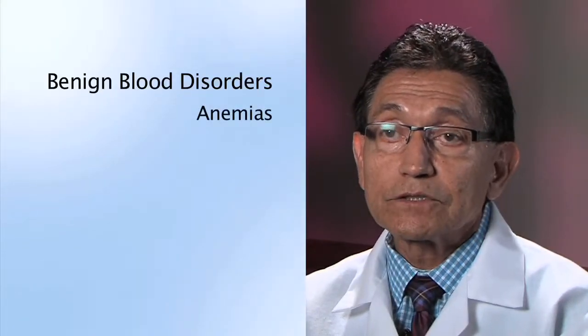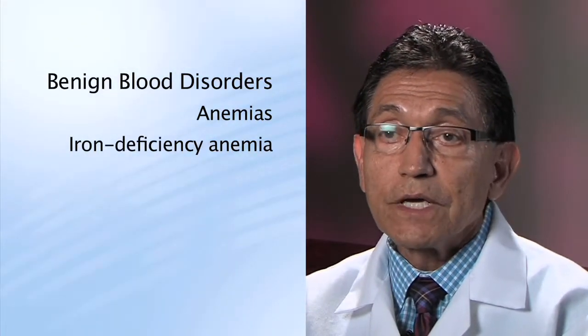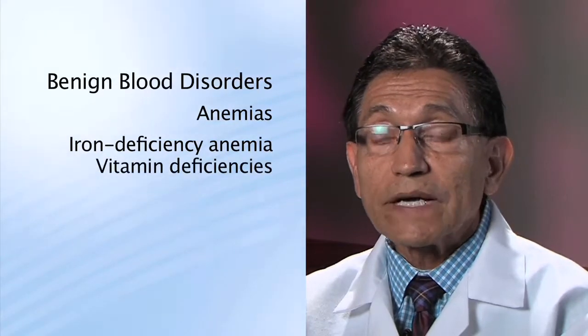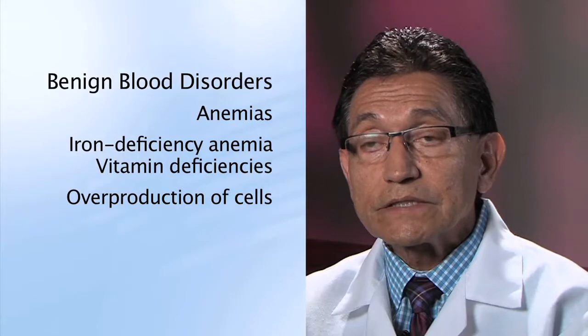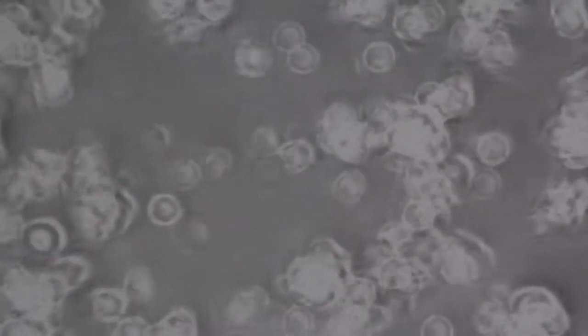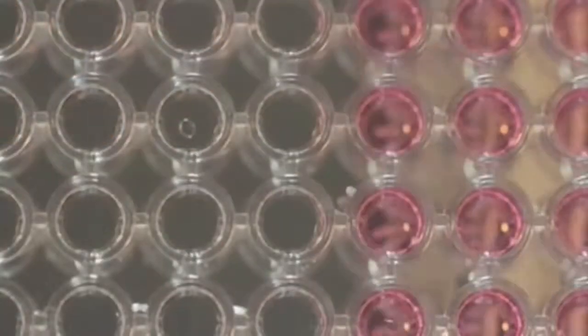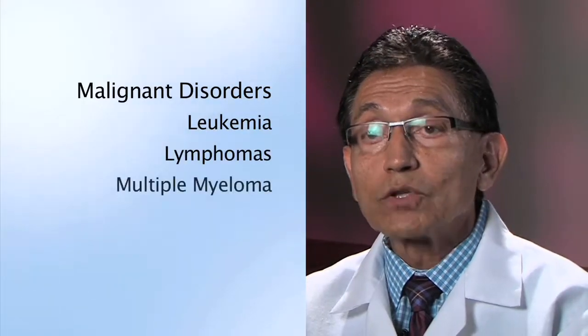In general, blood disorders are divided into malignant and benign. The benign disorders are those of anemia, such as iron deficiency anemias, or deficiencies of other vitamins, and also the overproduction, possibly of red cells and platelets. The malignant disorders are those in which there is abnormal production of cells, such as leukemias, lymphomas, and multiple myeloma.